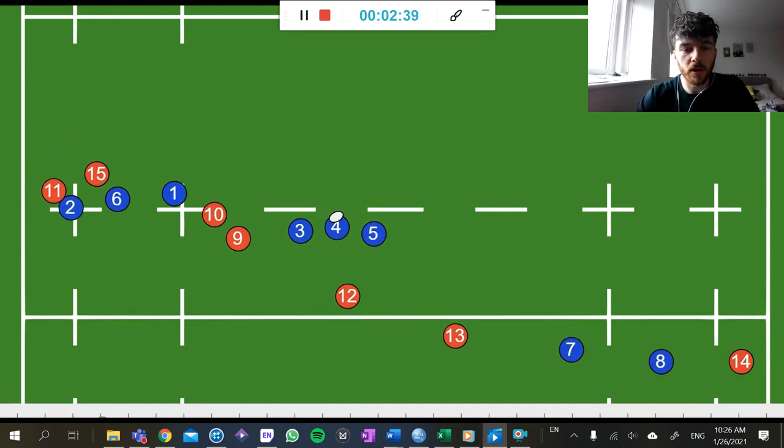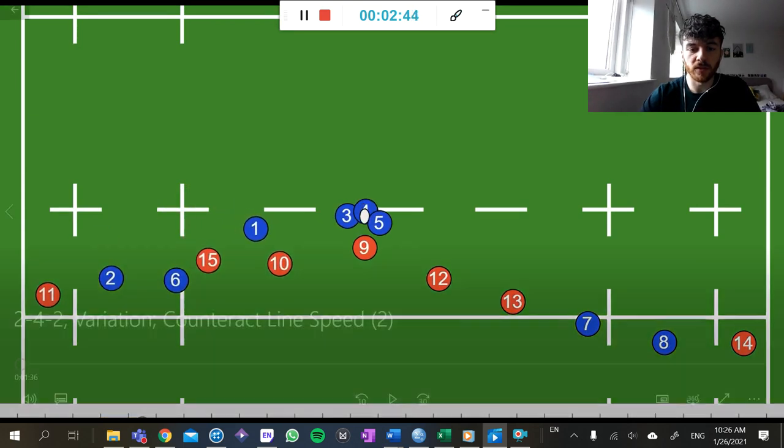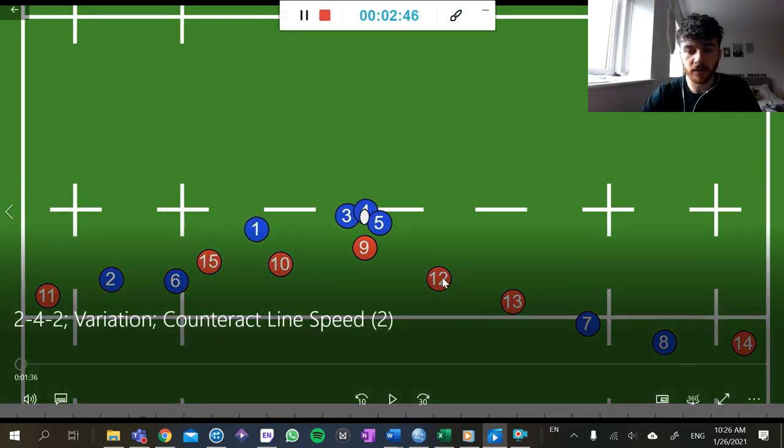So as he hits the pod, again, like I talked about before in the previous video about the 2-4-2 system, our two playmakers, we can have one at each side. They're versatile. And then we have our two hunters, so they're just going to drop back.